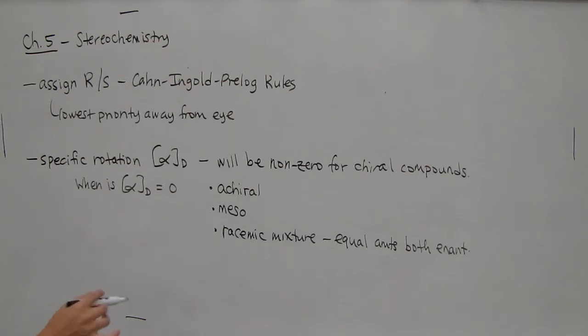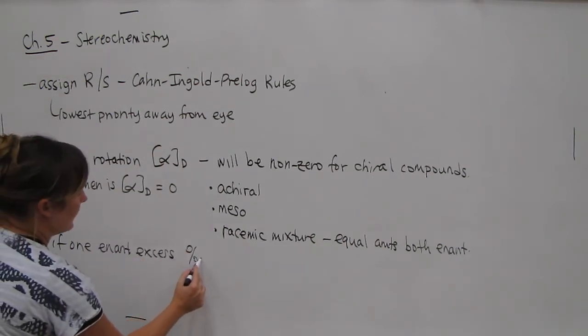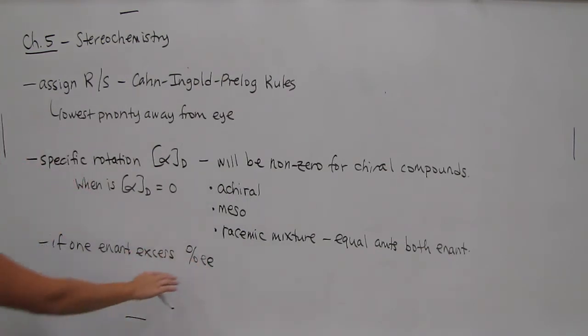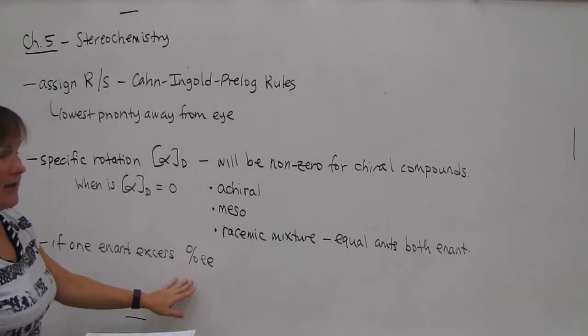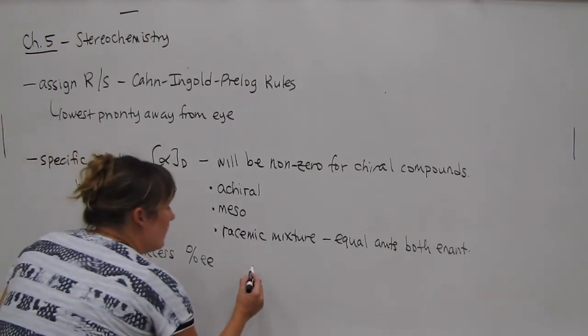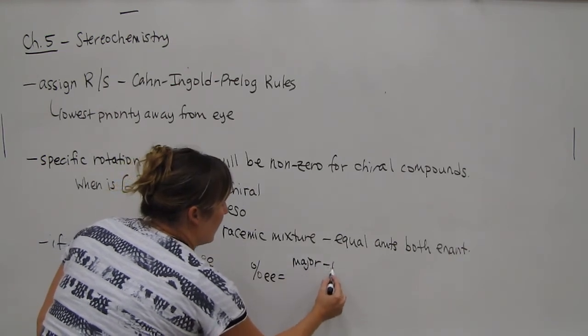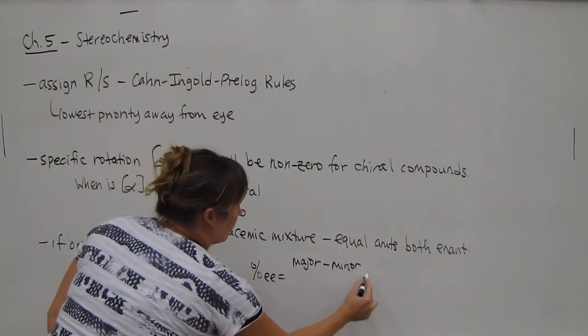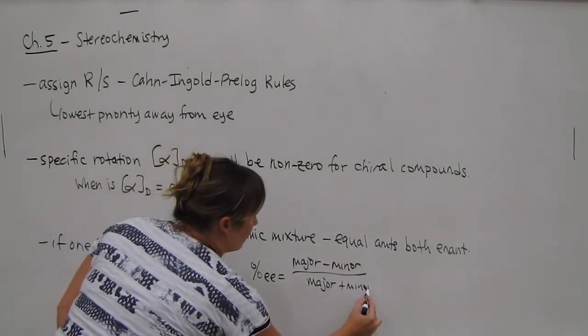And so basically one was R and one was S, and they cancel out. If one enantiomer is in excess, though, so if one enantiomer is in excess, we have what's called percent EE, and this is percent enantiomeric excess. And there were two formulas in this section, and you will be given these on an exam, but you want to make sure you know how to use them. The first formula is percent EE is major minus minor over major plus minor times 100.